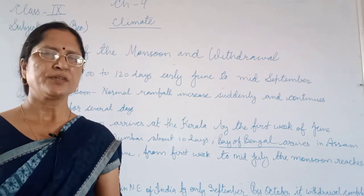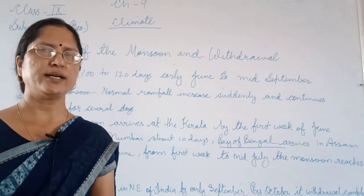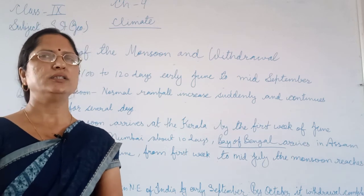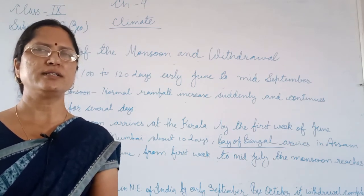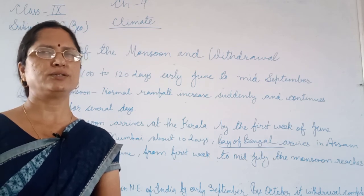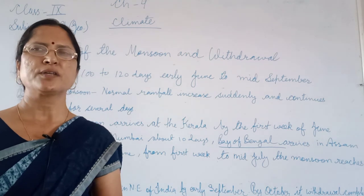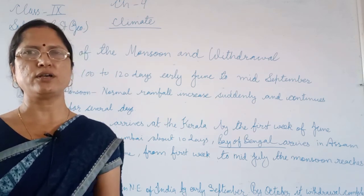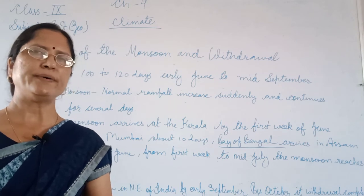So now you understand: monsoonal winds enter from the south and spread across all of India by mid-July. Rainfall varies — where there are water bodies and dense forests, rainfall is more; dry areas like the hot desert of Rajasthan and the cold desert of Ladakh receive less rain. The condition of the monsoon — whether it is late, average, or good — is determined by wind conditions and pressure changes in the Pacific and Indian Oceans.